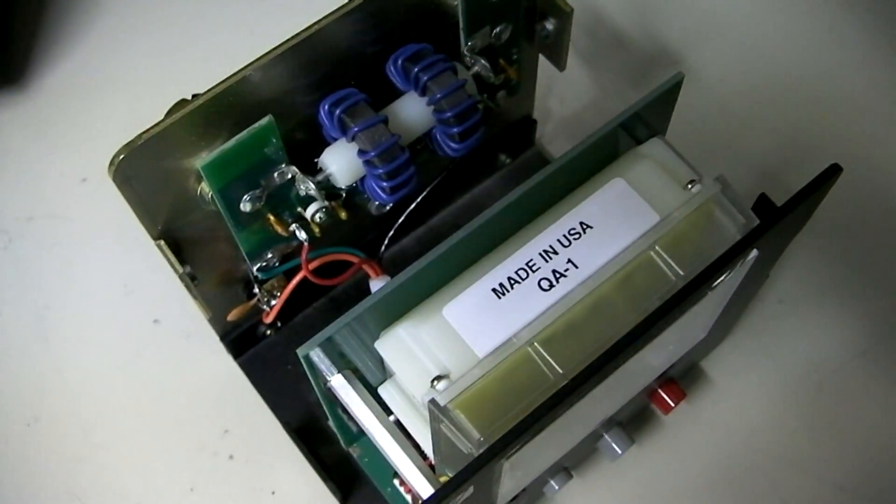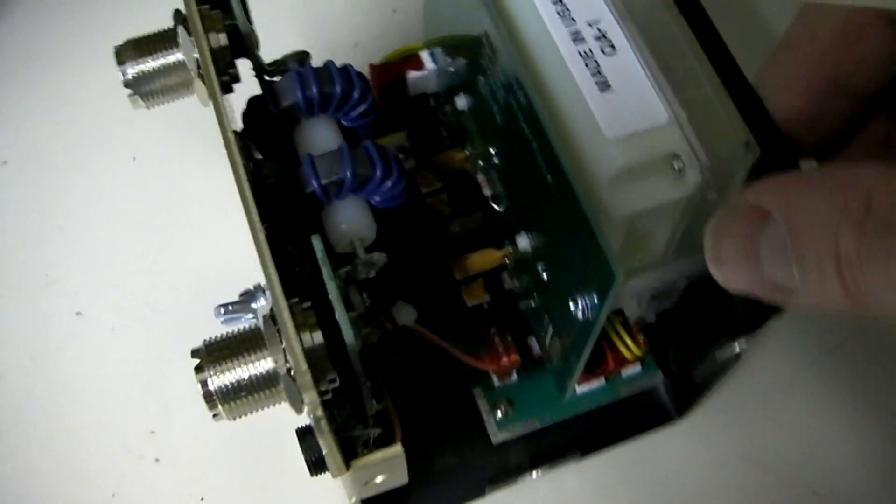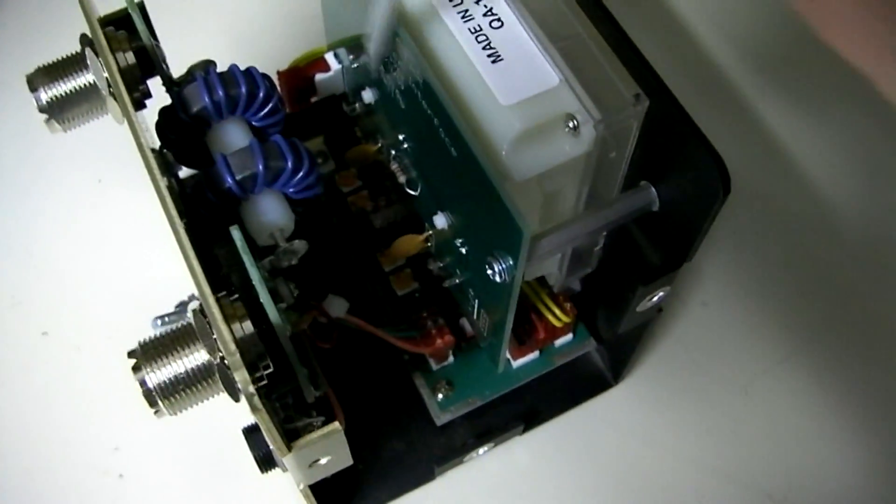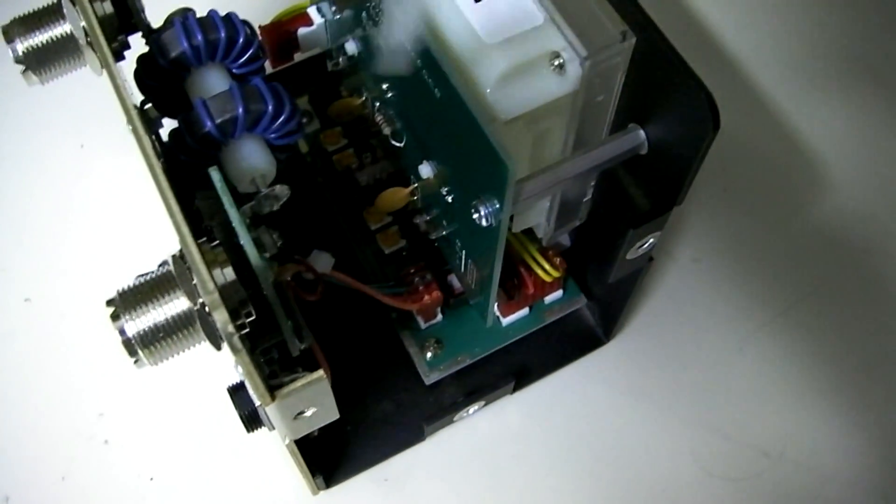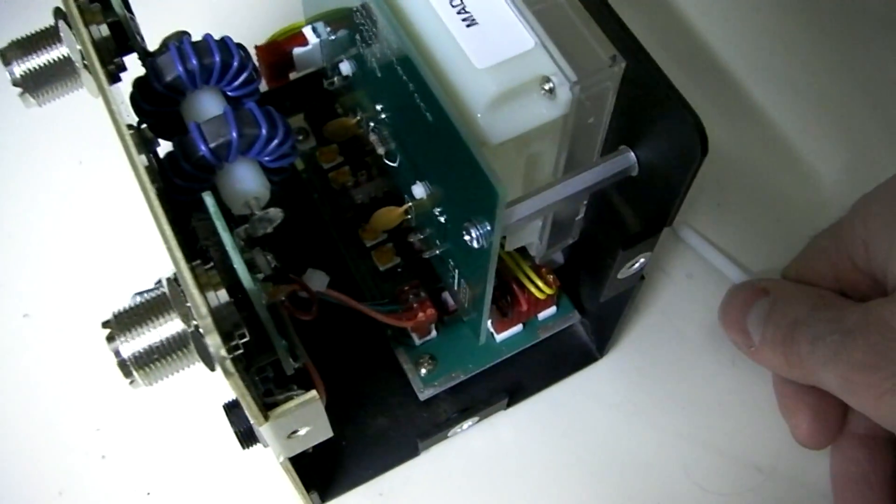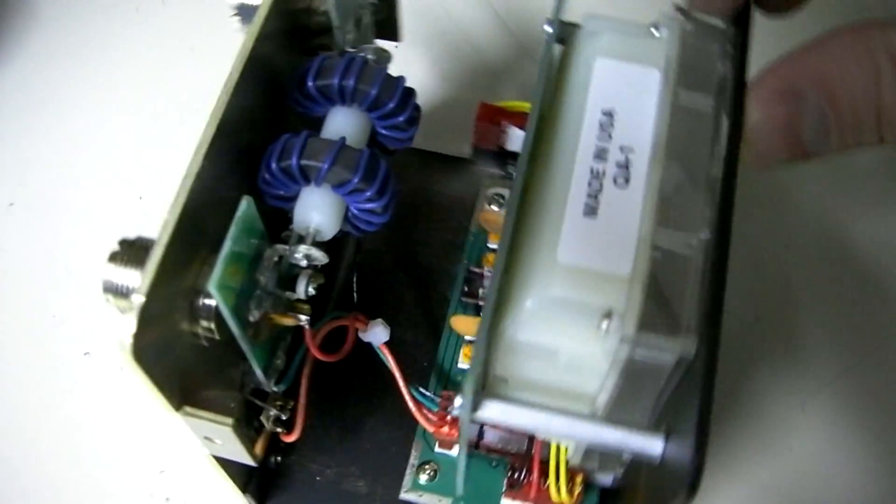All right. This is the inside of the PALSTAR PM-2000A. And you can see there's a circuit board here on the back of the meter. Circuit board on the bottom. There's actually adjustment points in there so you can calibrate it yourself if you have the correct equipment to do so. They do include information in the manual about how to do that.